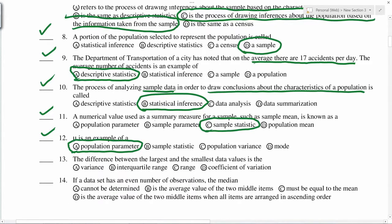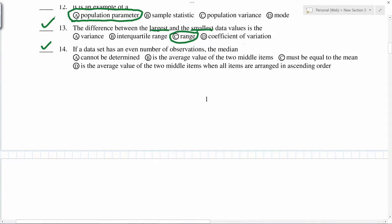Difference between largest and smallest is called range. If a data set has even number of observations, then median is the average value of the two middle items when all items are arranged in ascending or descending order. So they should be first put in order, and then only you can find the median.